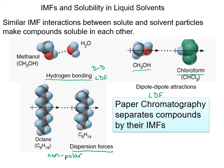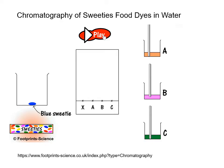We're going to see how paper chromatography separates compounds by their intermolecular forces, starting with an animation from Footprints Science. We're going to do a chromatography of SWEETI food dyes in water, with food dye A, B, and C as known samples, and we will be doing a chromatograph of the blue SWEETI dye, which will be called X.